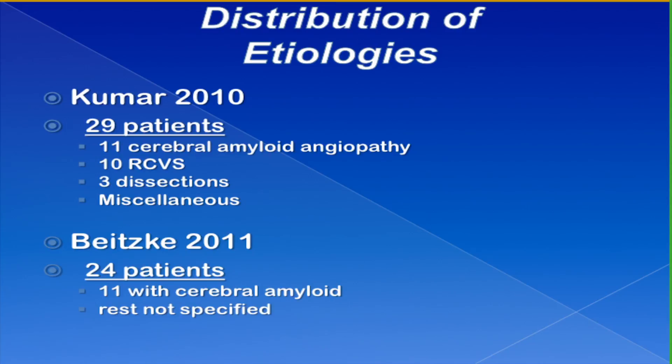These are the most frequent etiologies from the two largest case series. One series had 29 patients, about evenly divided between amyloid angiopathy and reversible vasoconstrictive syndrome. The other case series also had a fair amount of patients with amyloid angiopathy.